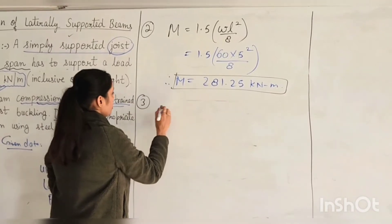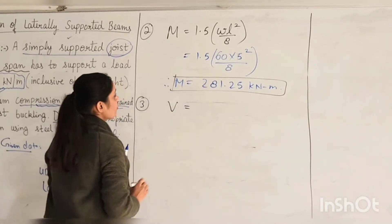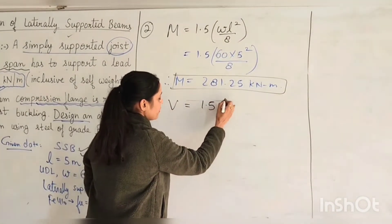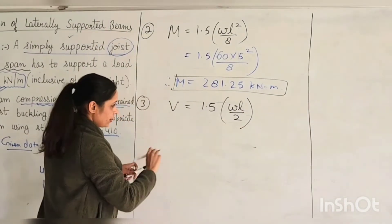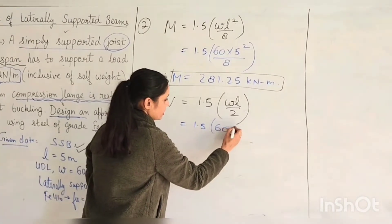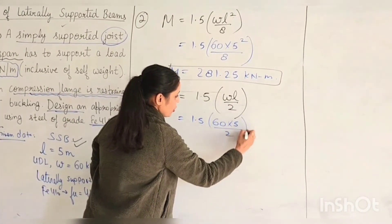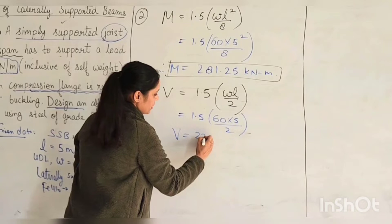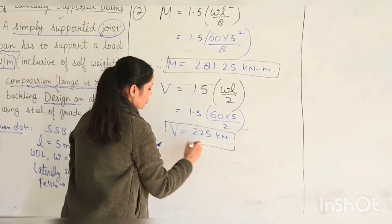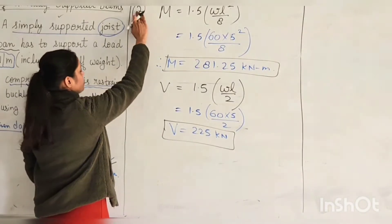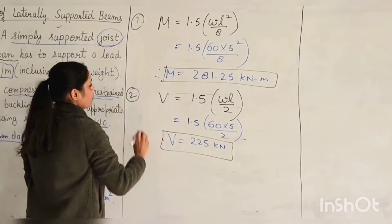We can calculate the first step. After this step, we have our V. V will be 1.5 times W by 2. 1.5 times all the items, you have 60, 5, 2. We will solve the problem and we will get 225 kN. This is step 1. Step 2, right? These steps are exactly required.